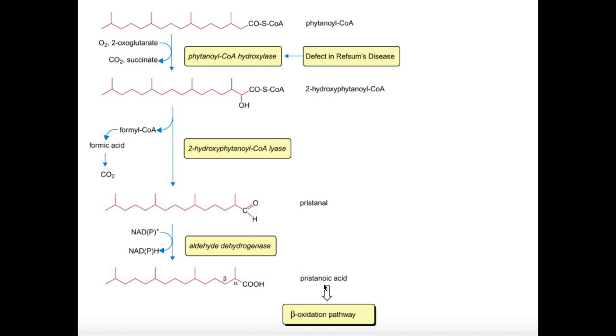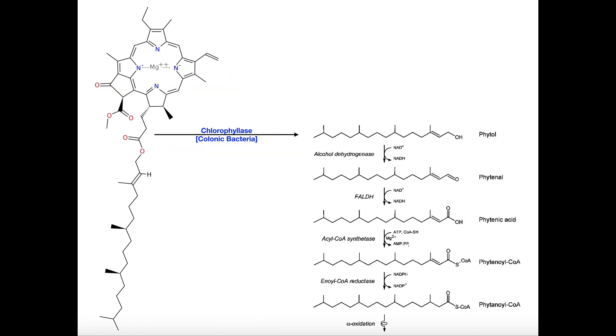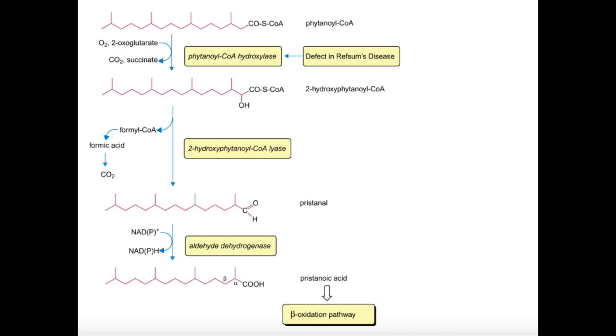So every time I perform beta oxidation, the beta carbon is never blocked by one of those methyl group branches. So I don't need to do these reactions anymore. All I need to do is six rounds of beta oxidation, and I'm going to get my products that I can then metabolize. And so this process would allow ruminant mammals to obtain a lot of energy through eating things like grass, which of course contain chlorophyll or leaves, and then they can take off that phytol side chain, metabolize it into phytanoyl-CoA, and then they can perform alpha oxidation, and then a bunch of beta oxidation to derive energy.